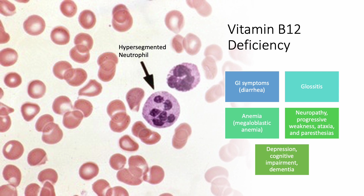B12 deficiency can cause GI symptoms like diarrhea and inflammation of the tongue called glossitis, as we saw with folic acid and other vitamins. It is also a cause of megaloblastic anemia, meaning the red blood cells are enlarged. Looking at the picture on screen, you can see that the neutrophils are hypersegmented — meaning they have multiple segments — which is characteristic of megaloblastic anemia, also seen with folic acid deficiency.